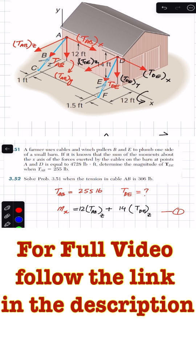If it is known that the sum of the moments about the x-axis of the forces exerted by the cables on the barn at points A and D is equal to 4728 pound-feet, determine the magnitude of the tension in wire DE.